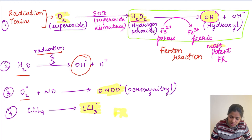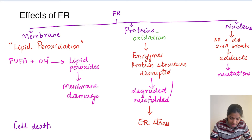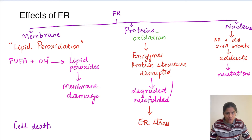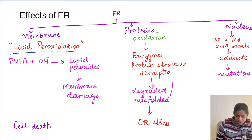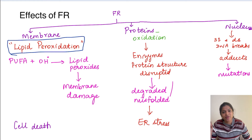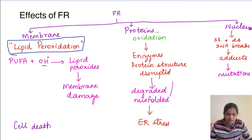Free radicals can damage the membrane, proteins, or nucleus. In the membrane, they cause lipid peroxidation - a very important process. PUFA - polyunsaturated fatty acid - is present in the cell membrane. When the cell membrane PUFA is attacked by hydroxyl ion, it results in the formation of lipid peroxides. These lipid peroxides in turn damage the membrane.